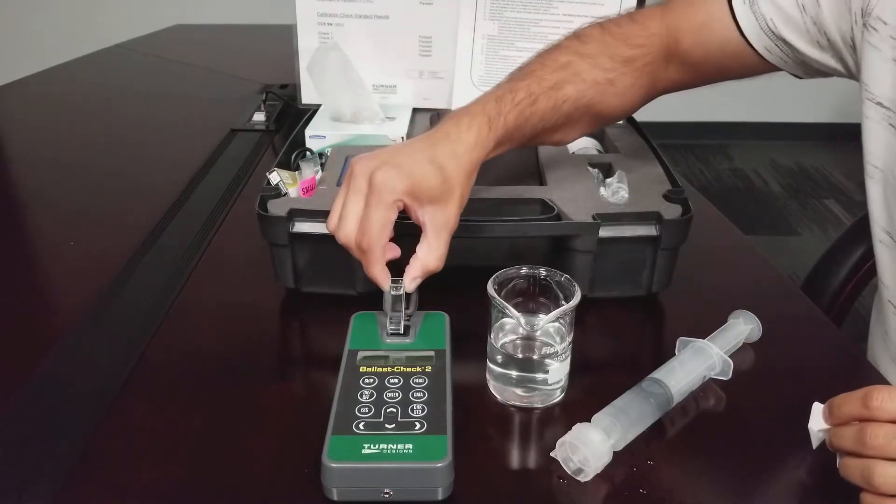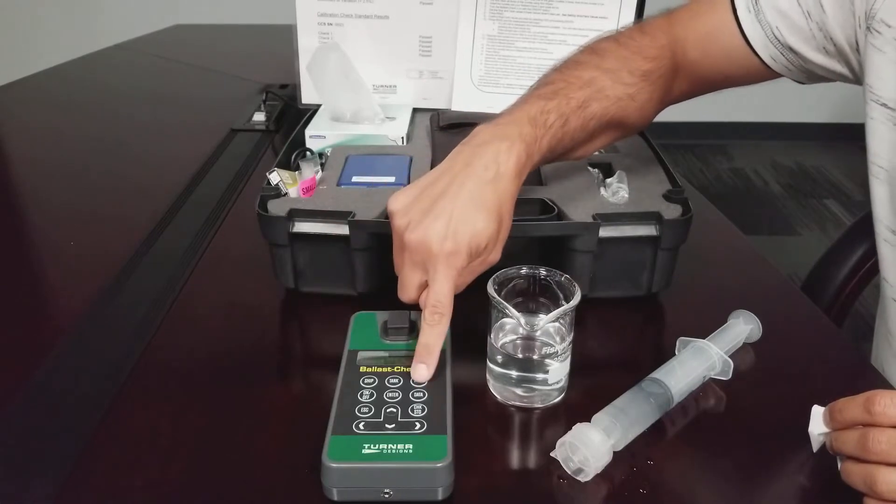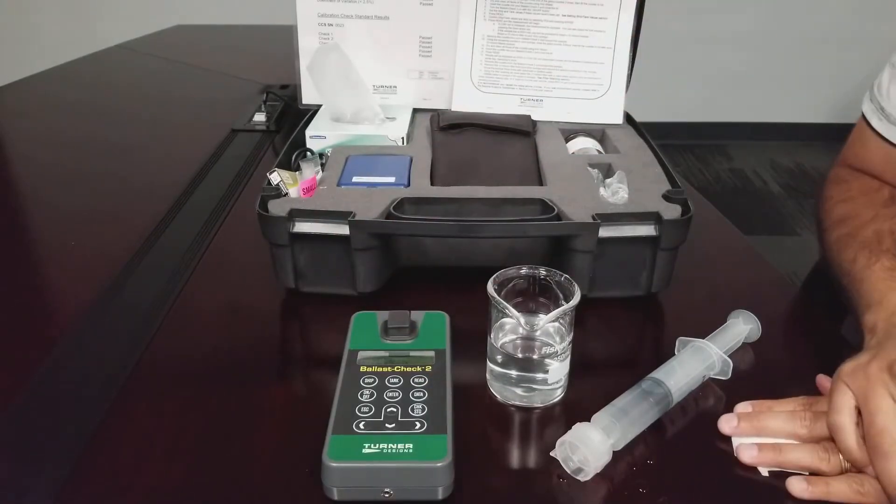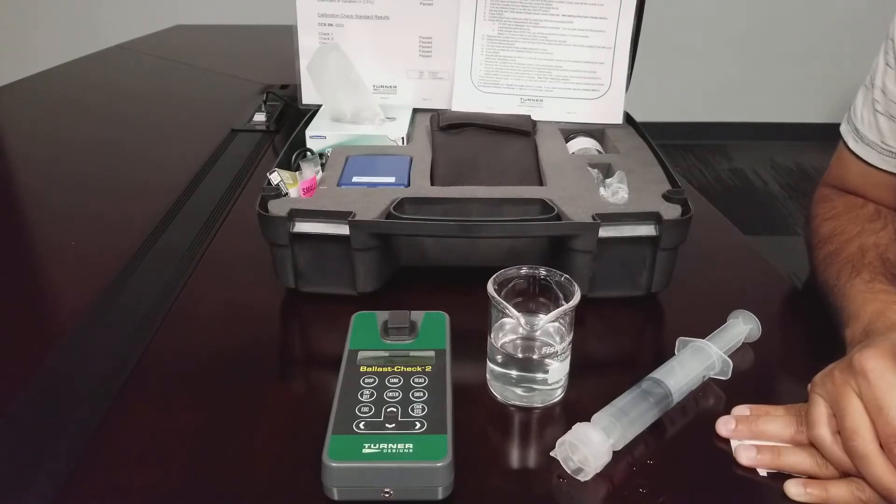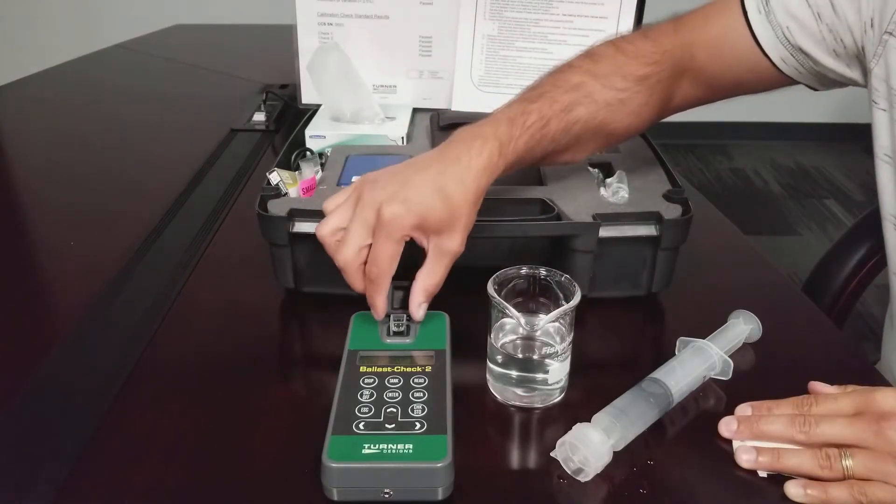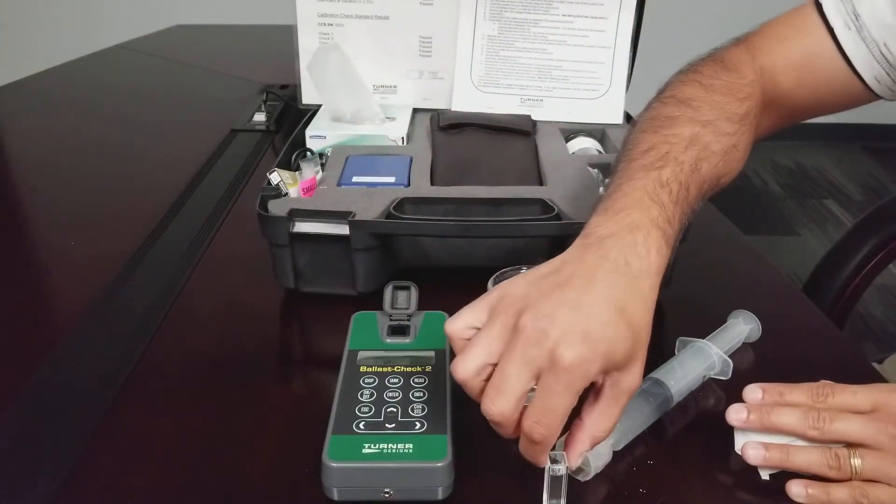Insert the cuvette into the sample compartment, close the lid, and press read. Wait for the measurement to complete. Then remove the cuvette from the sample compartment.